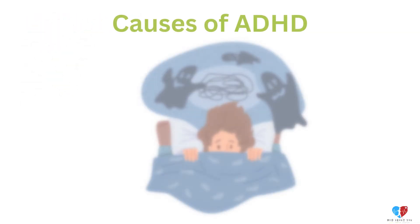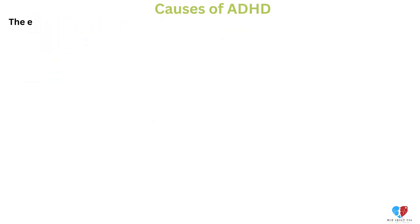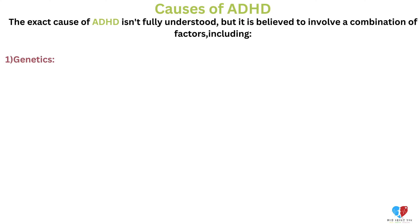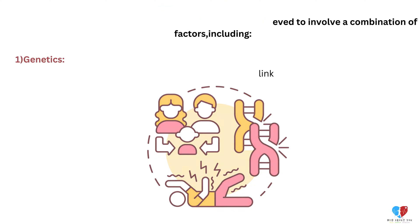Causes of ADHD. The exact cause of ADHD isn't fully understood, but it is believed to involve a combination of factors, including: 1. Genetics — ADHD often runs in families, suggesting a strong genetic link.